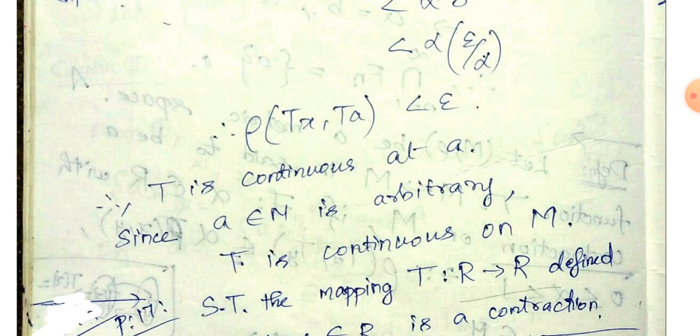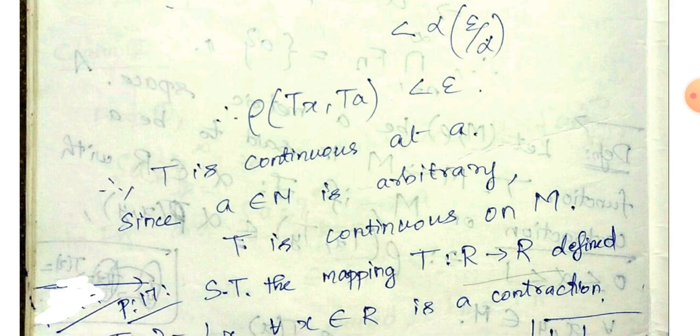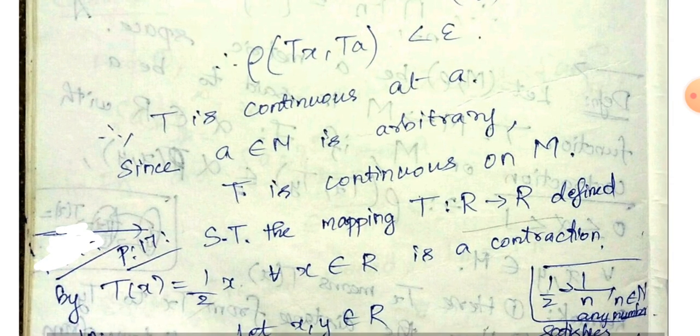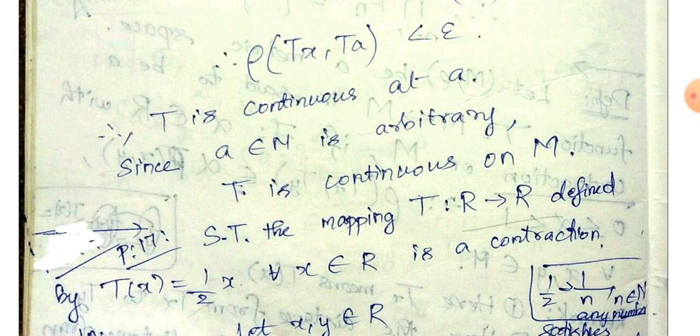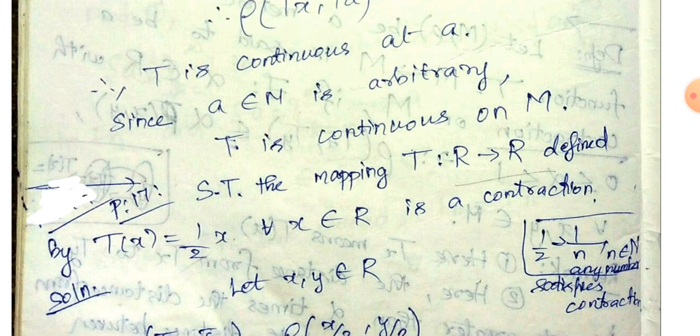If ρ(x, a) < δ, then we get ρ(Tx, Ta) < ε, which shows T is continuous at point a. Since a is an arbitrary point in M, T is continuous on M.